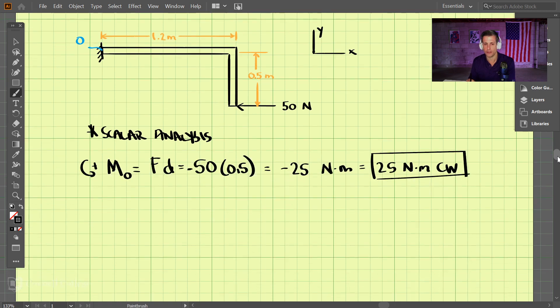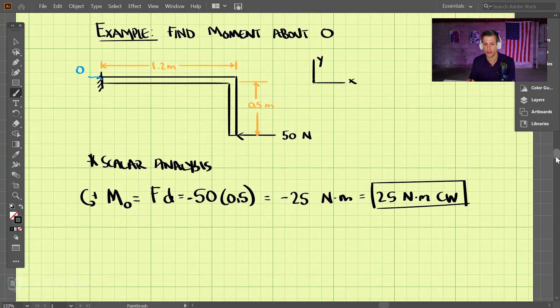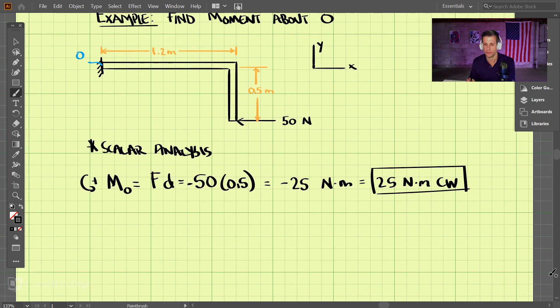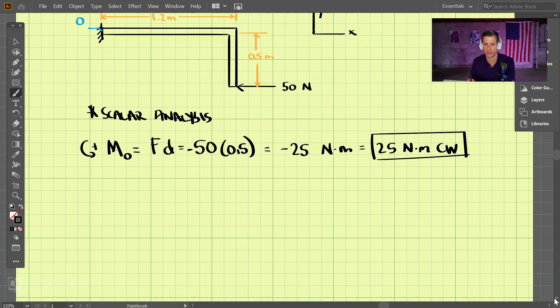Now let's do it using vector analysis. The moment about O, and this is going to be a vector, is R cross F.